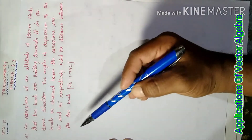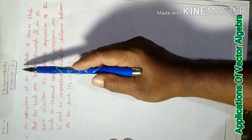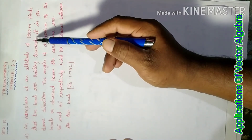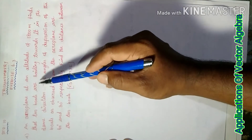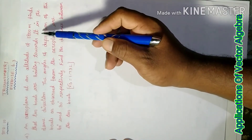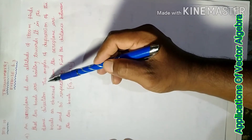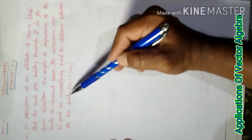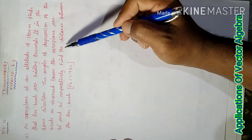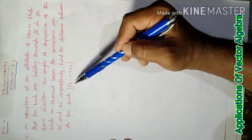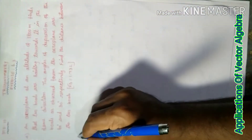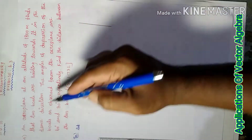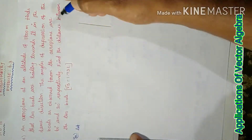Good morning students. Today our 10th standard chapter is Trigonometry, Exercise 6.3, Problem 4. An aeroplane at an altitude of 1800 meters finds that two boats are seen in the same direction. The angles of depression of the boats observed from the aeroplane are 60 degrees and 30 degrees respectively. Find the distance between the two boats. Root 3 value equals 1.732. Solution: let students begin.